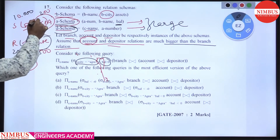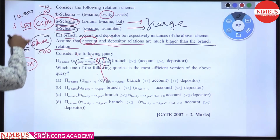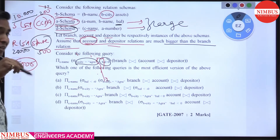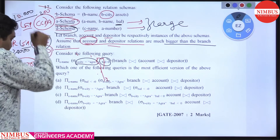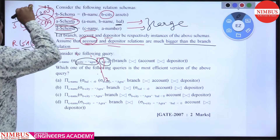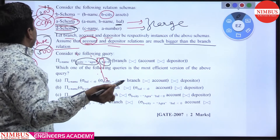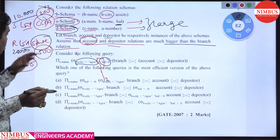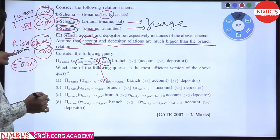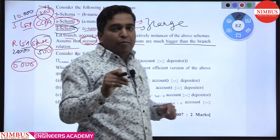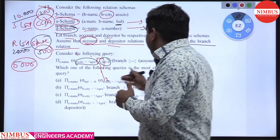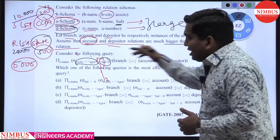If you do the join first, it is done between 10,000 and 20,000 tuples. But if you first apply the conditions — filter state of Rajasthan to get 500 tuples and CGPA greater than 8 to get 200 tuples — then the join is only between 200 and 500 tuples. So first apply condition, then perform the join operation.